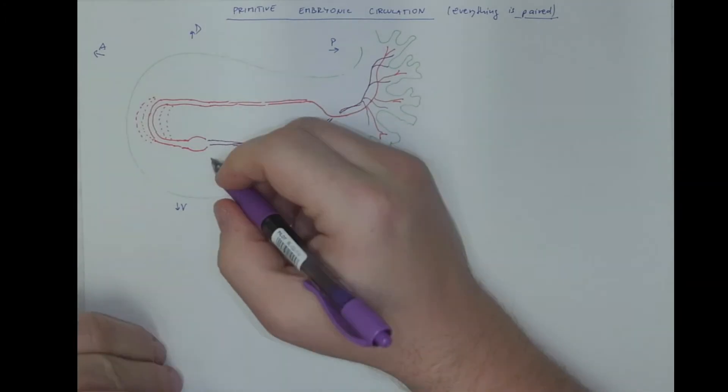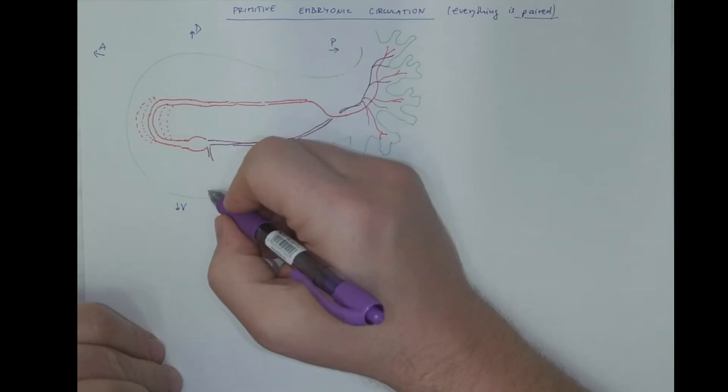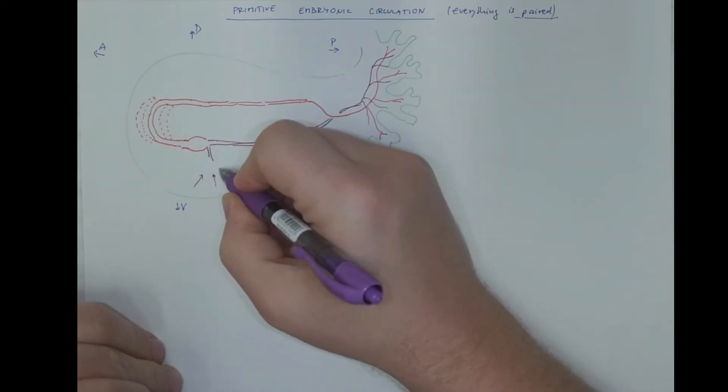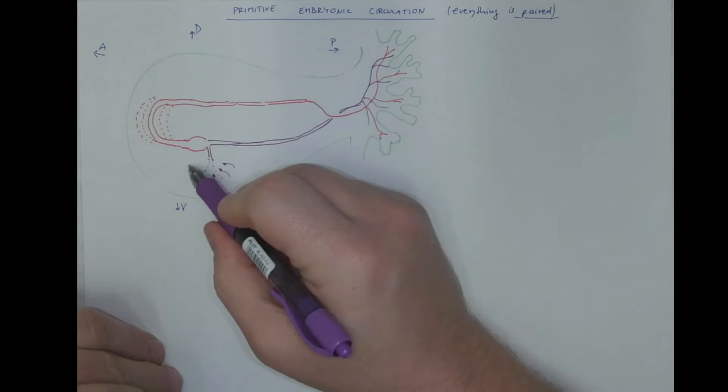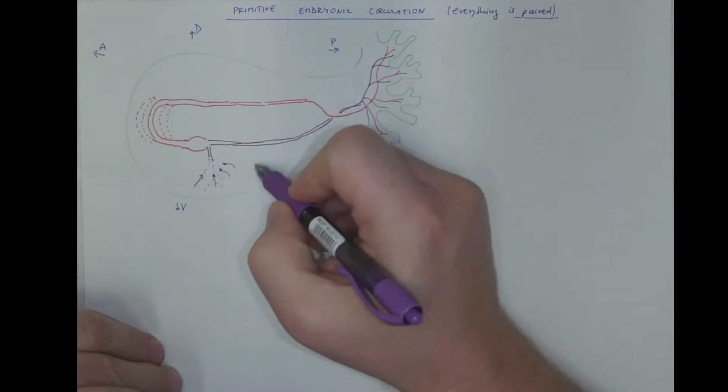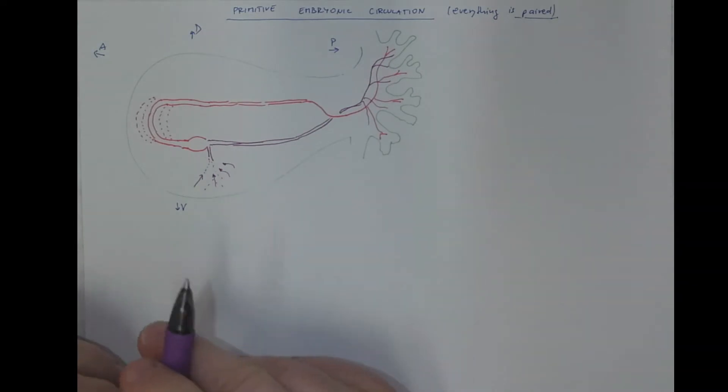Another vein that goes to the heart is the vein that collects blood from the blood vessels that originated in the wall of the yolk vesicle, which would be somewhere here in this ventral region. This is called the vitelline vein.